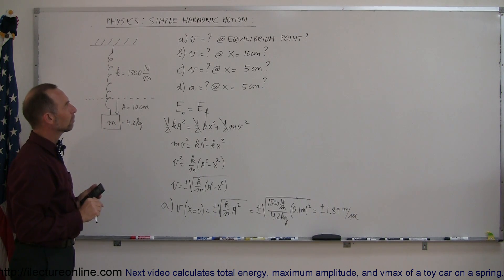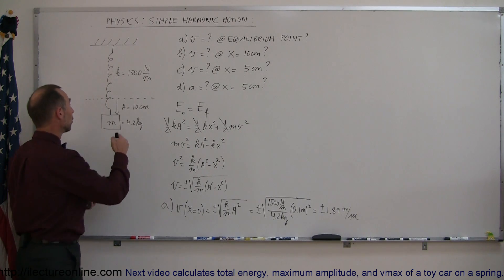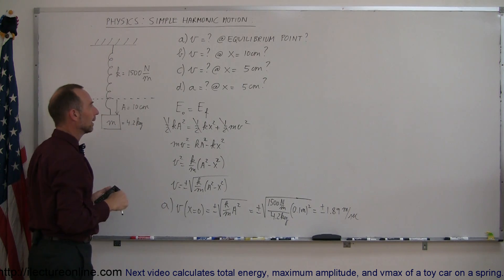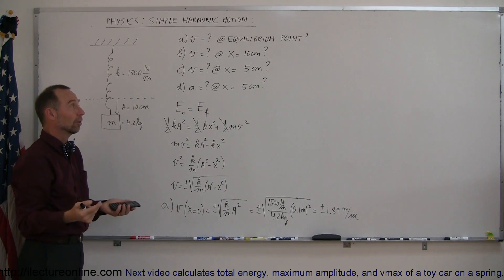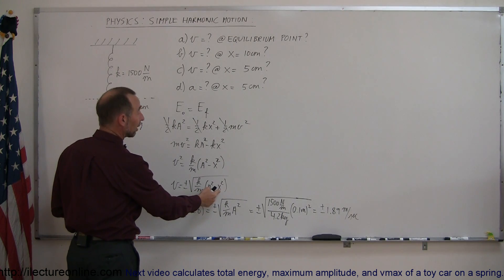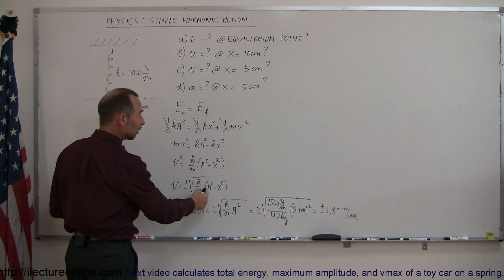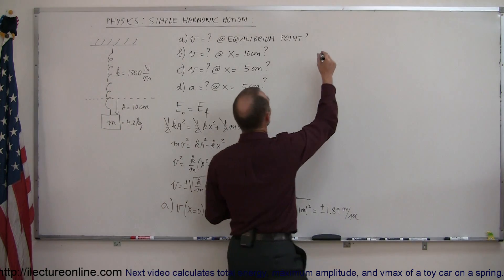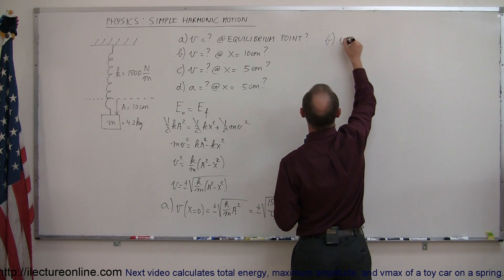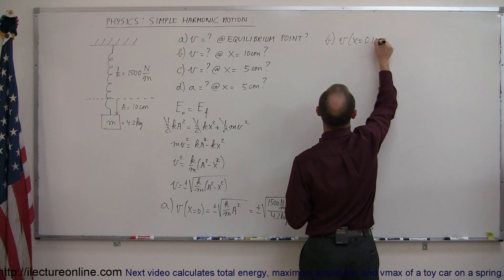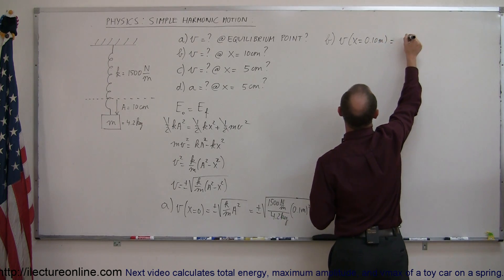For part b, what is the velocity at x = 10 cm? Logic says when the object is at maximum elongation the velocity should be zero. We can quickly check: if x = 10 cm and a = 10 cm, then 10² − 10² = 0, so velocity equals zero. Velocity at x = 0.10 m equals zero.